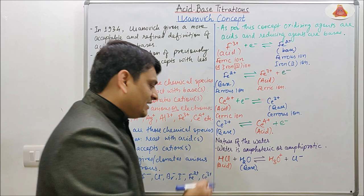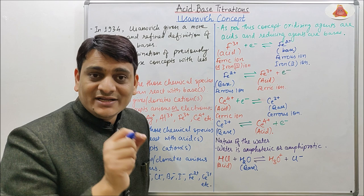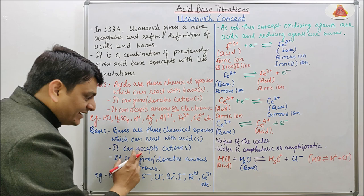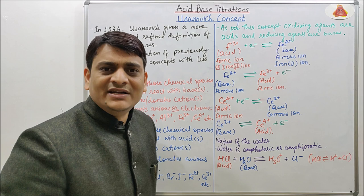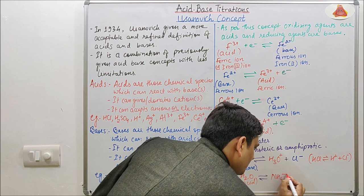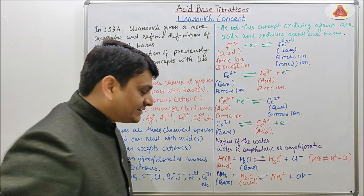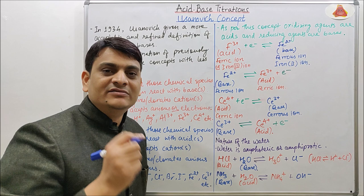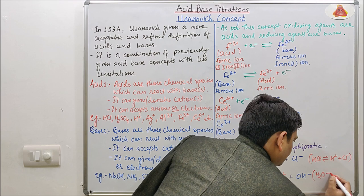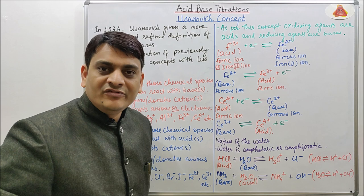In the first example, HCl acts as an acid and H₂O acts as a base. HCl is converted into H⁺ and Cl⁻, and that H⁺ — a cation — is donated to water. As per the definition, water can accept a cation, so H₂O acts as a base. In the second example, NH₃ acts as a base and H₂O acts as an acid. H₂O is converted into H⁺ and OH⁻, and the H⁺ is donated to NH₃. So water is amphoteric or amphiprotic in nature.